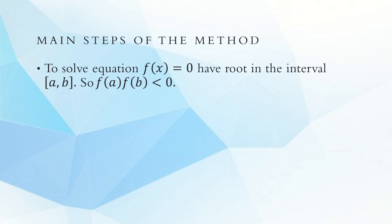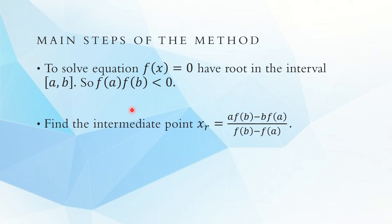Suppose we want to solve the equation f(x) = 0, and that equation should have a root in the interval [a, b]. So f(a) and f(b) would have opposite signs — that's what we have in the bisection method as well. Then we find the intermediate point using the formula: xr = [a·f(b) - b·f(a)] / [f(b) - f(a)]. This formula is obtained by joining the two points (a, f(a)) and (b, f(b)) through a secant line — the point where that secant line intersects the x-axis gives you this point.